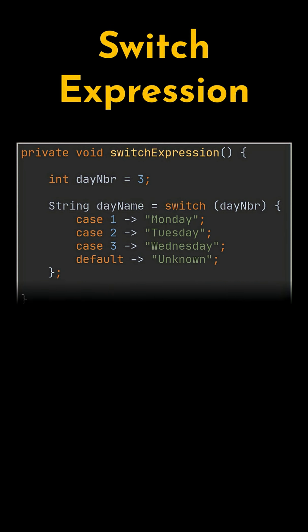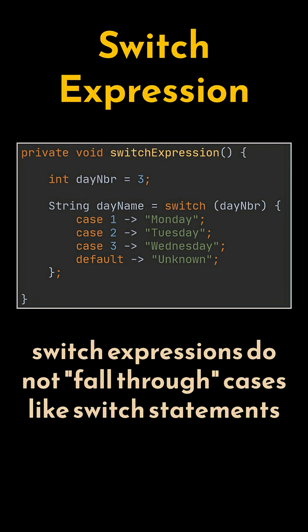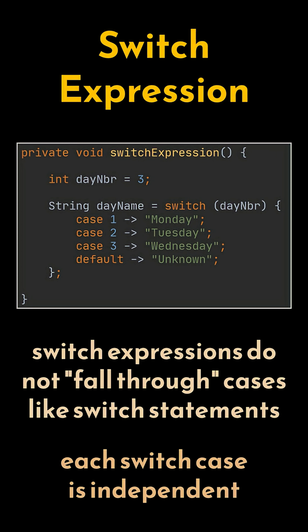Java 12 introduced switch expressions, which is a new syntax that uses the lambda operator instead of the colon typically seen in switch statements. Notice there are no break keywords in this version. That's because switch expressions do not fall through cases as traditional switch statements do, meaning each case is independent and there's no need for break to stop execution.